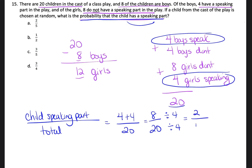20 divided by 4 is 5. So it would be 2 out of every 5 students that would have a speaking part if chosen at random. Our answer is going to be A, 2 fifths.